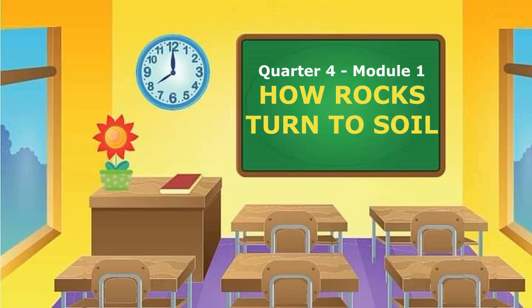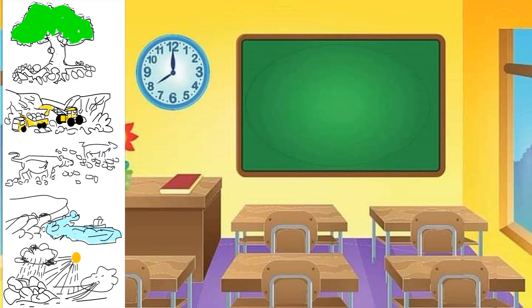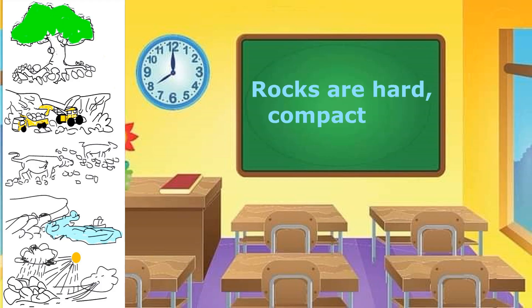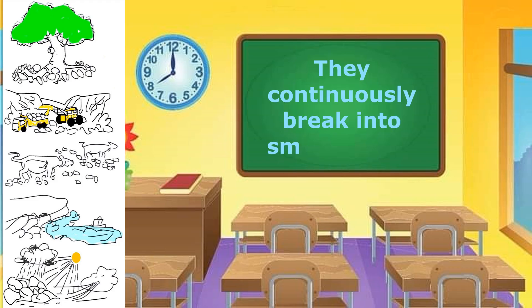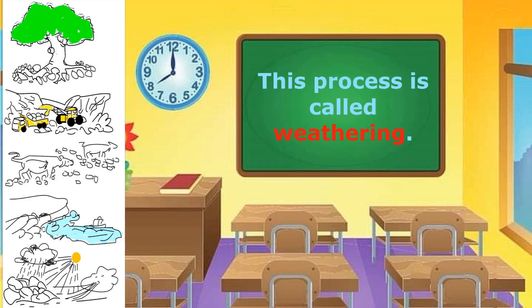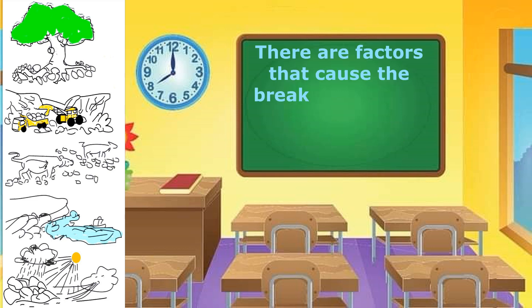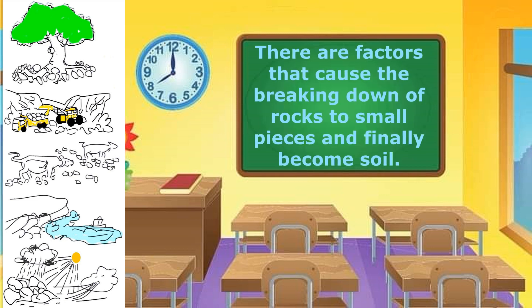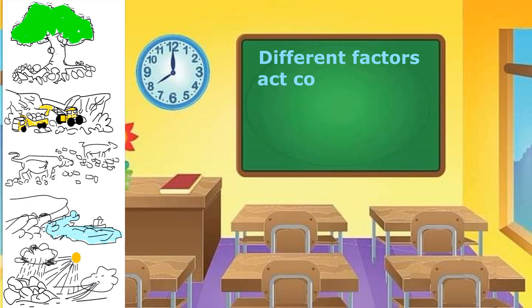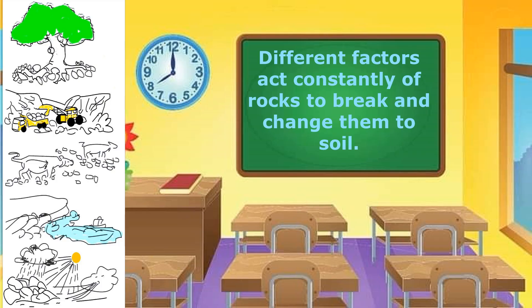How Rocks Turn to Soil. Rocks are hard, compact, and solid. They continuously break into small pieces. This process is called weathering. There are factors that cause the breaking down of rocks to small pieces and finally become soil. Different factors act constantly on rocks to break and change them to soil.